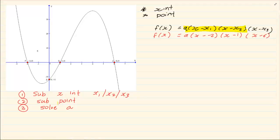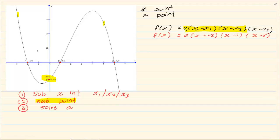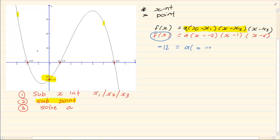Next we are going to substitute the point in. The point can be any random point — they don't need to give it on the x-intercept or y-intercept, they can give it anywhere. So I am going to substitute 0 and minus 12 into x and y. This represents my y, so I have minus 12 equals a times (0 minus minus 2), which gives plus 2, times (0 minus 1), times (0 minus 6).